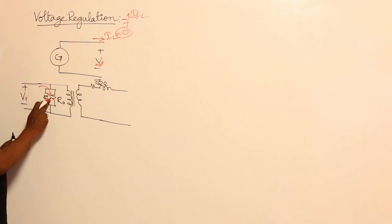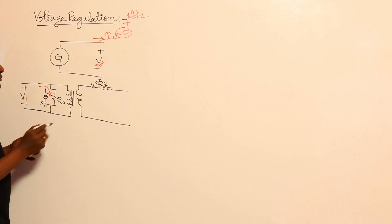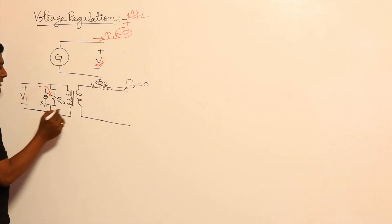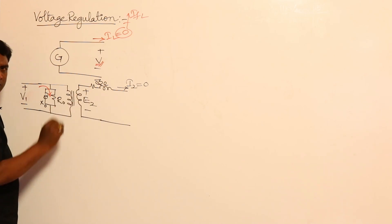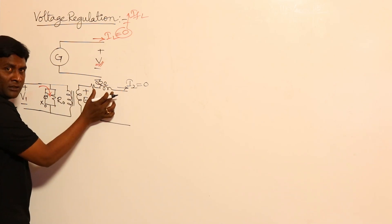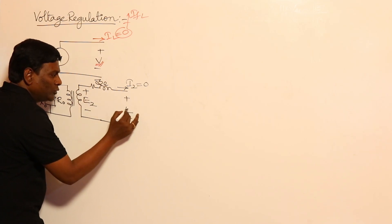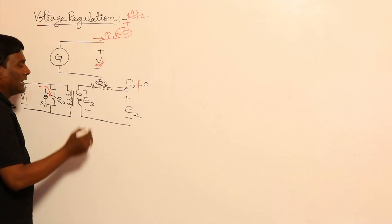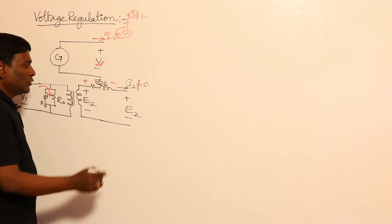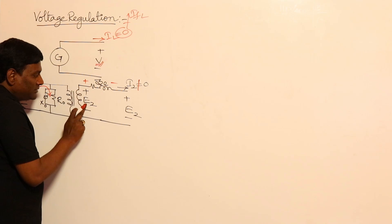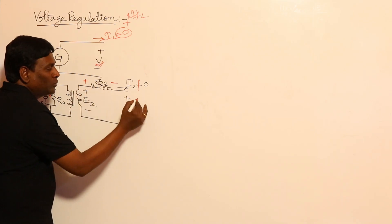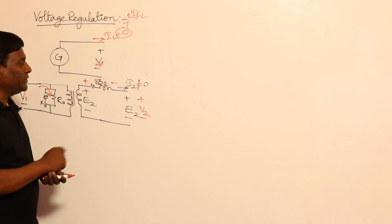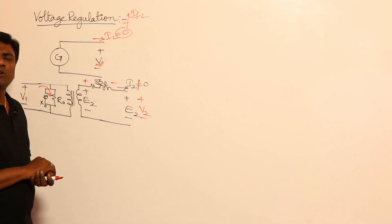Because V1 is an infinite source, this particular voltage will not vary. If load current I2 is zero, then E2 — the internally induced voltage — will directly appear at the output, because with zero current the impedance drop is zero. If I2 is non-zero, a voltage drop appears across ZE, so V2 equals E2 minus that drop. Therefore V2 will vary. This variation of E2 to V2 with respect to load current is nothing but voltage regulation.